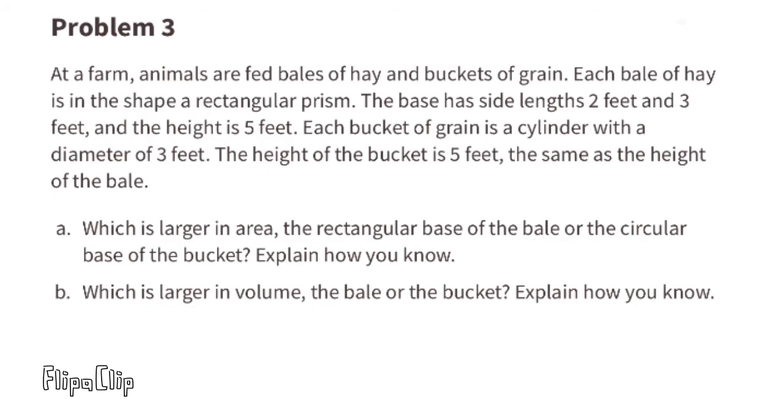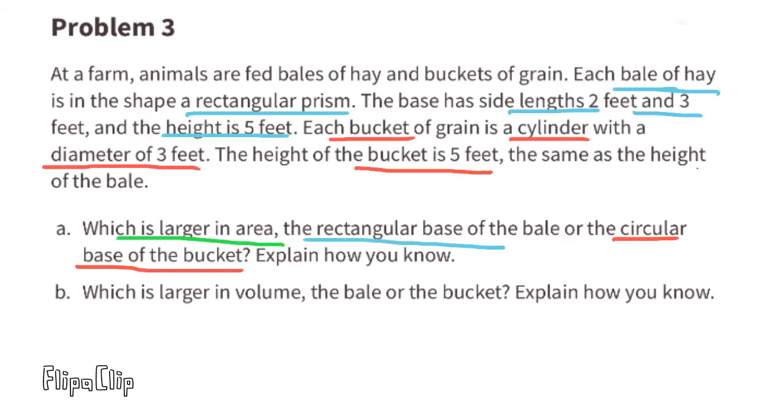Problem number 3. At a farm, animals are fed bales of hay and buckets of grain. Each bale of hay is in the shape of a rectangular prism. The base has side lengths 2 feet and 3 feet, and the height is 5 feet. Each bucket of grain is a cylinder with a diameter of 3 feet. The height of the bucket is 5 feet, the same as the height of the bale. A. Which is larger in area, the rectangle base of the bale or the circular base of the bucket? Explain how you know.